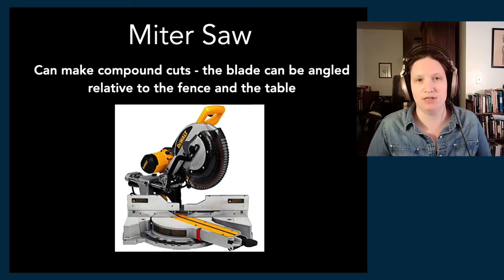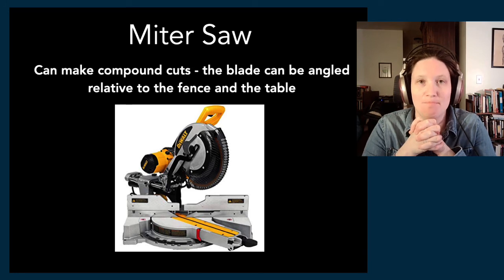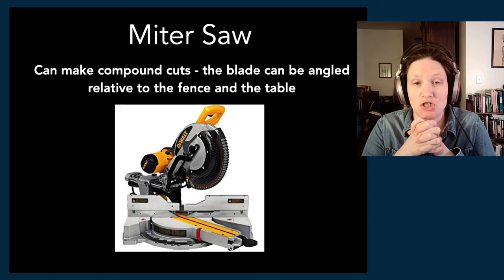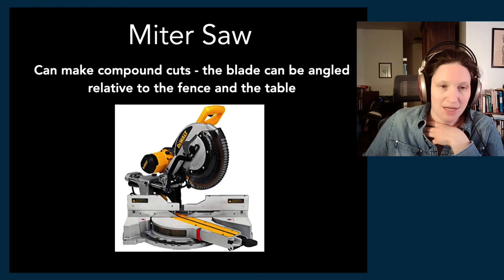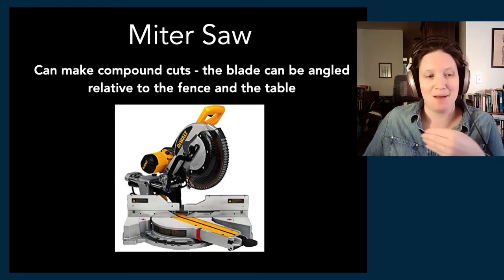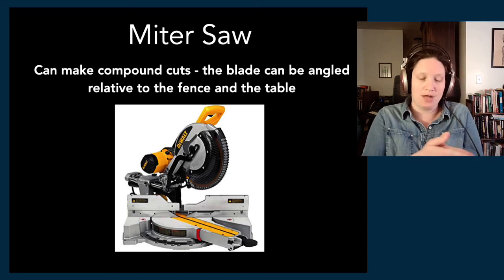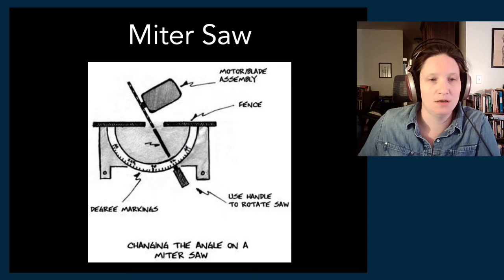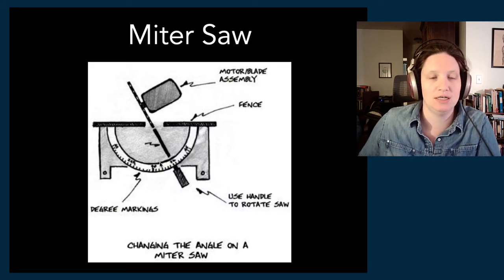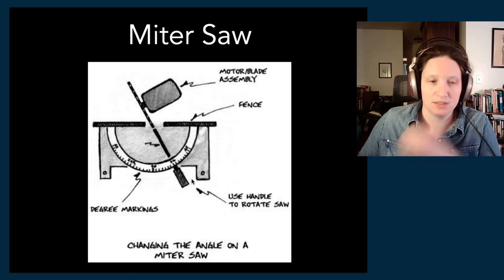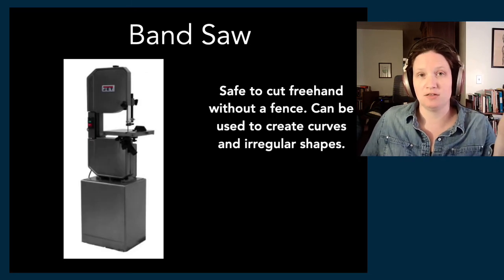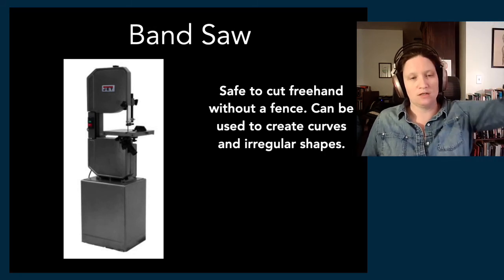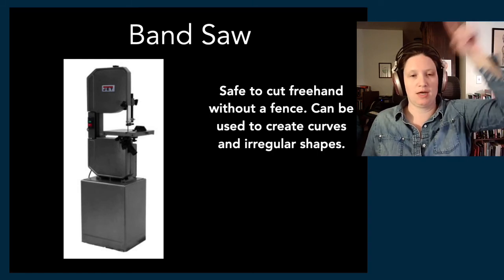What we have more commonly is a miter saw, which is more common than a radial arm saw nowadays. A miter saw can make compound cuts — in addition to a cut at an angle relative to the fence, you're also able to tilt the entire blade. That lets you make what's called a compound miter cut, where you're angled and slanted at the same time. You can use this handle to lock the saw at various degree markings, which is very helpful.